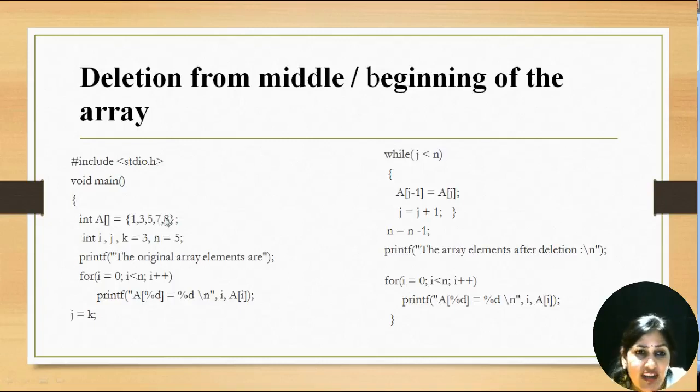So just we have to shift 8 by 1 position. n shows the number of elements in the array. At the end we have to decrease the value of n by 1. That is after deletion of 7 the value of n will be 4.